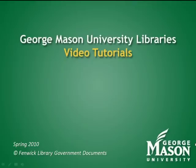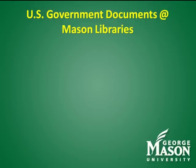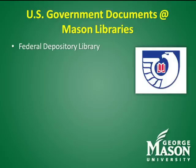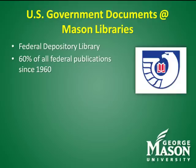Welcome to a video tutorial from George Mason University Libraries. In this tutorial, we'll learn how to find United States government publications. U.S. government publications are valuable primary sources of information on a variety of topics. As a federal selective depository library, Mason Libraries has been receiving 60% of all federal publications since 1960.